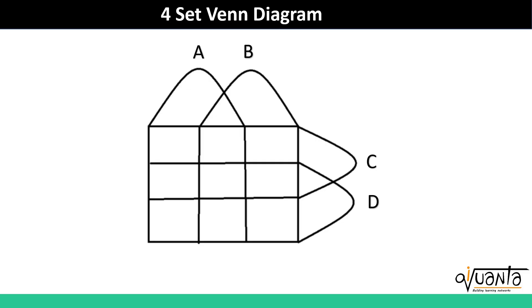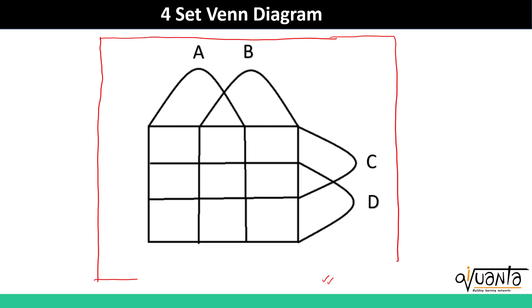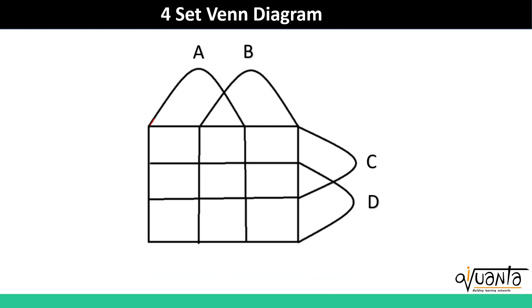So a 4-set Venn diagram is basically represented like this. If there is a universal set outside, then it will include all these 4 sets in the universal set. It is very easy to mark the regions. Let us try to find out which region includes A, B, C, D — only A, only B and all those things. This is the set that represents A, this whole block from here to here. Similarly we have B, C and D also.